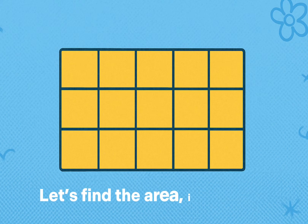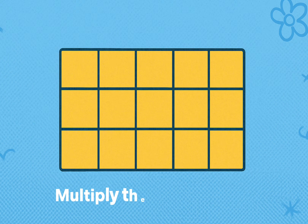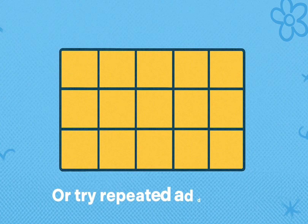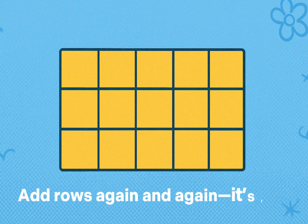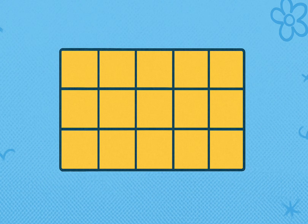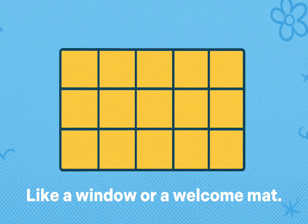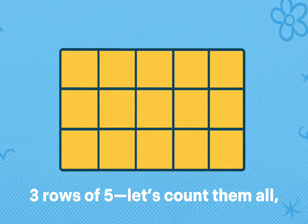Let's find the area, it's fun to do. Multiply the sides, it's easy for you. Or try repeated addition too — add rows again and again, it's true. A rectangle is neat and flat, like a window or a welcome mat.